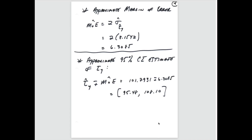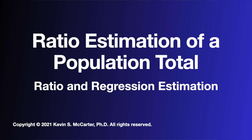Multiplying the estimated standard error by two gives the estimated approximate 95 percent margin of error for τ̂_y: 6.3085. The approximate 95 percent confidence interval estimate of τ_y then ranges from 95.48 pounds up to 108.10 pounds. So we are approximately 95 percent confident that the total weight of sugar in the oranges in the shipment is between 95.48 pounds and 108.10 pounds.